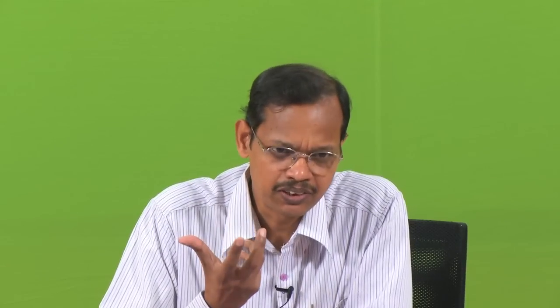When we go to protein stability, what does protein stability mean? When the protein is synthesized in ribosomes and goes to the folded state, it folds from the random coil conformation to a stable 3D structure. The 3D structure is also important to perform a function.